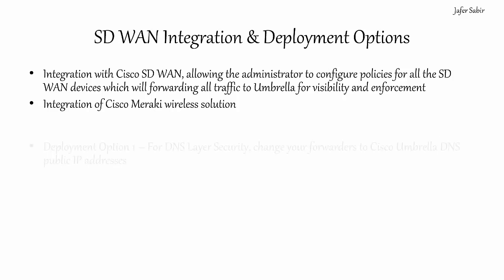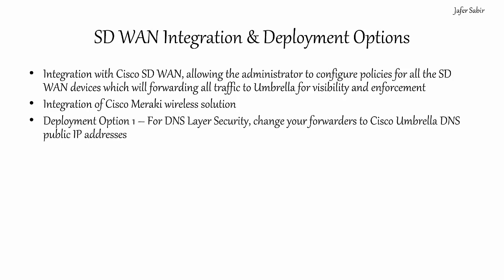Now for deployment methods — these depend on which features you are using. Deployment option one is to set up Umbrella DNS using the most basic setup, which is to change your DNS forwarders to Cisco Umbrella's public IP address. From there, all DNS requests will be managed by Umbrella, and the organization's public source address will be registered within the DNS dashboard so that Umbrella allows the connection through.